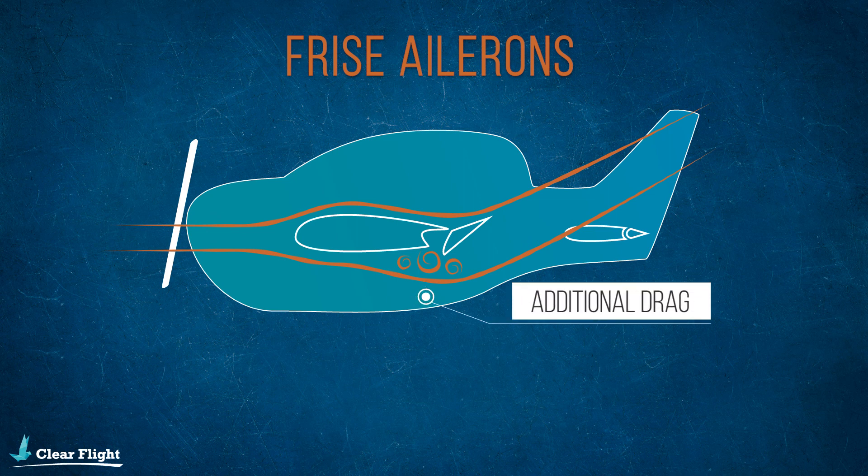Some aircraft incorporate both of these design features, so they will have Frise ailerons that have differential deflection.